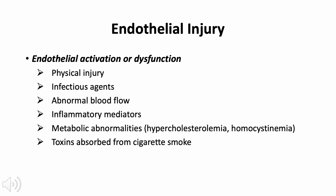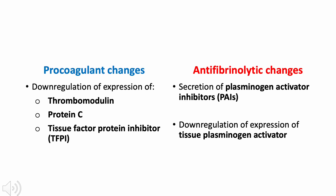The first abnormality in Virchow's triad that promotes thrombosis is endothelial injury. Severe endothelial injury may trigger thrombosis by exposing von Willebrand factor and tissue factor. Endothelial injury shifts the pendulum toward a more thrombotic state, including procoagulant changes - downregulation of thrombomodulin, protein C, and TFPI - and anti-fibrinolytic changes involving secretion of plasminogen activator inhibitors (PAIs) and downregulation of tissue plasminogen activator (TPA).